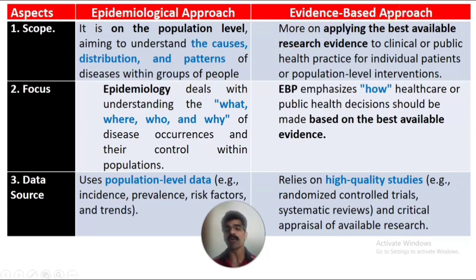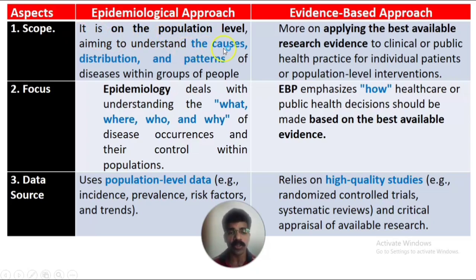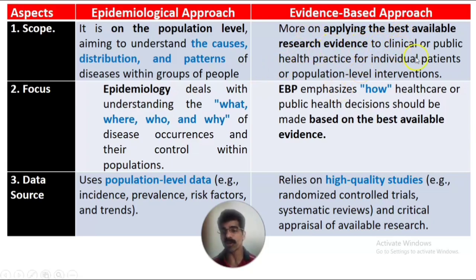Whereas the scope of the evidence-based approach is more on applying the best available research evidence to clinical settings or public health practice and community health nursing services — for individual patients or for whole population-level interventions. In epidemiological approach, the scope is to determine the etiology, distribution, and pattern of diseases; in evidence-based approach, we apply that study result as best available evidence for individual and population-level health promotion.